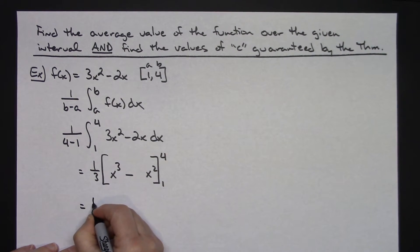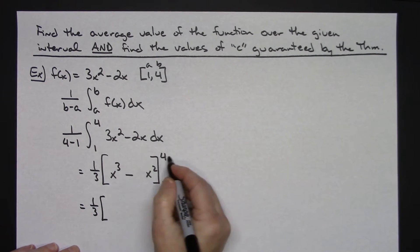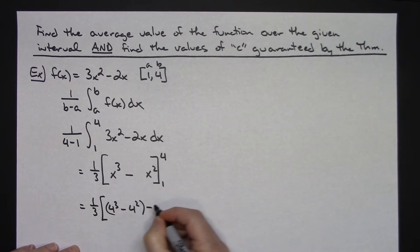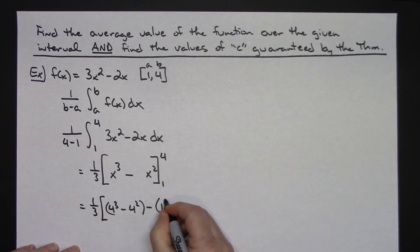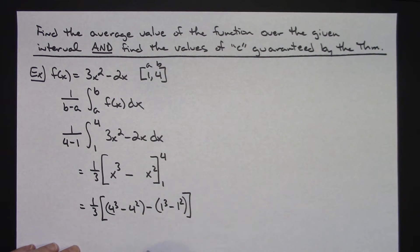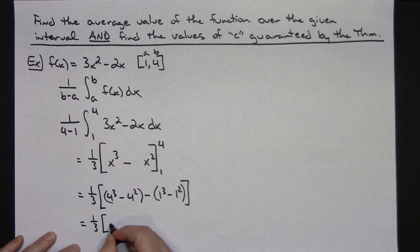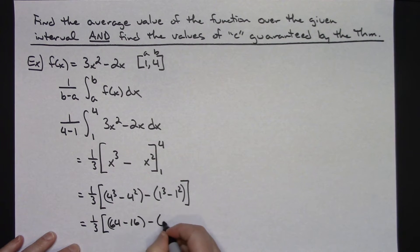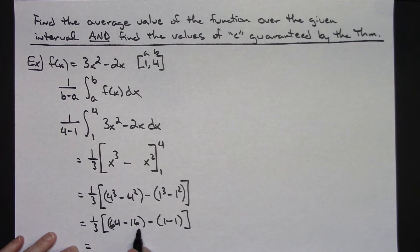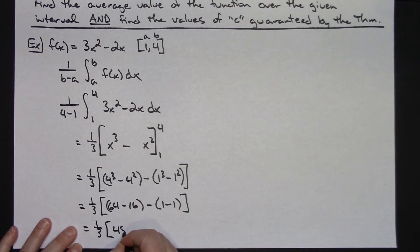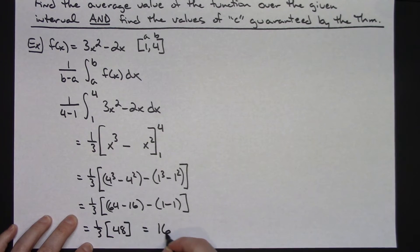Keeping the one-third out front, we're going to plug 4 in everywhere: 4 cubed minus 4 squared. Then plug 1 in everywhere: 1 cubed minus 1 squared. Doing the arithmetic: one-third times (64 minus 16) minus (1 minus 1), which gives one-third times 48.